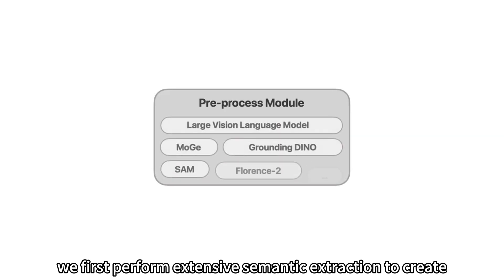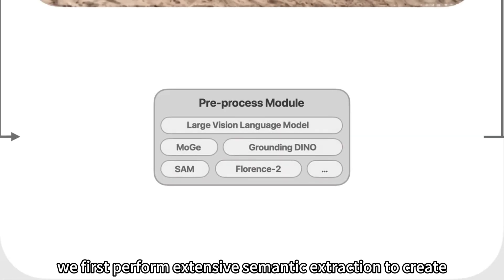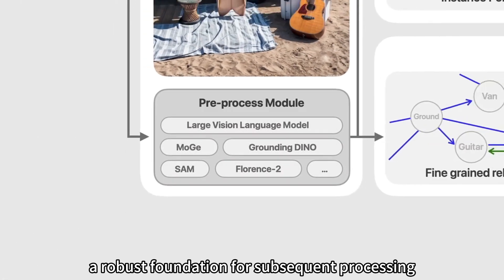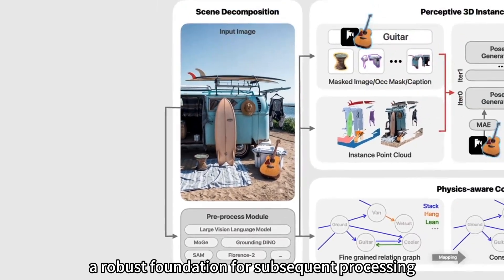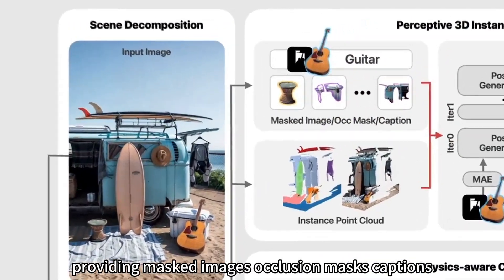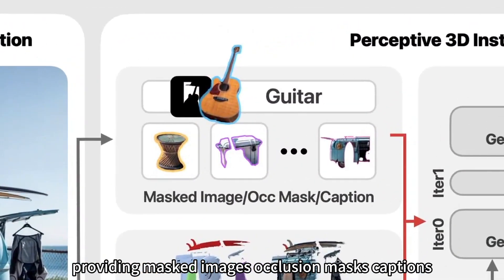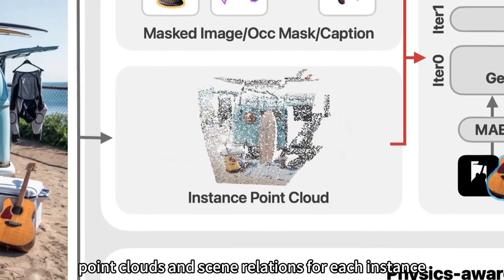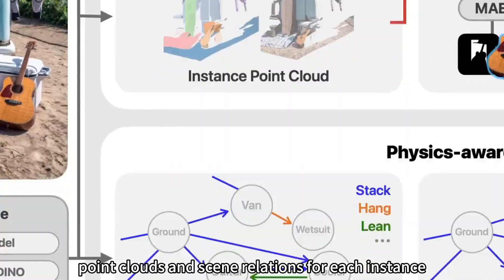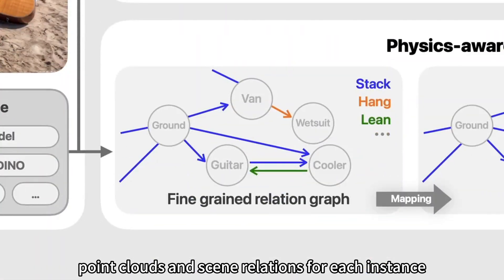Combining the strengths of existing modules, we first perform extensive semantic extraction to create a robust foundation for subsequent processing, providing masked images, occlusion masks, captions, point clouds, and scene relations for each instance.